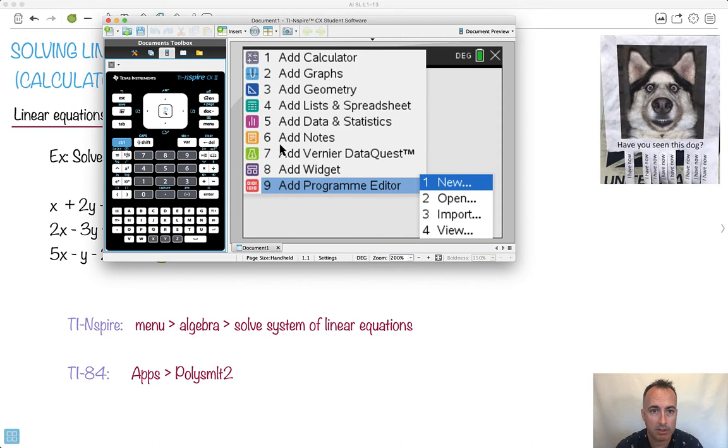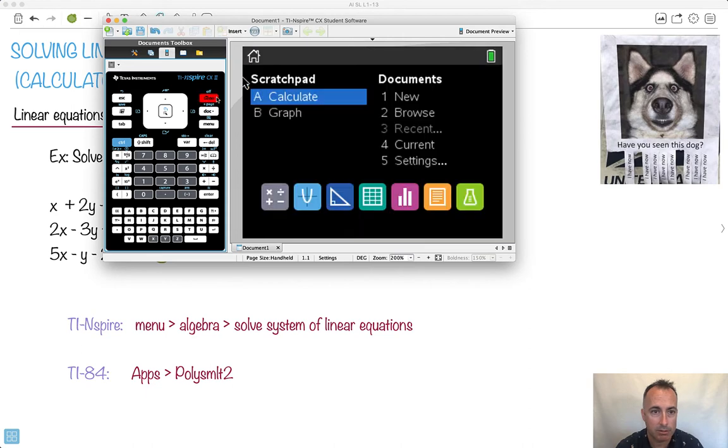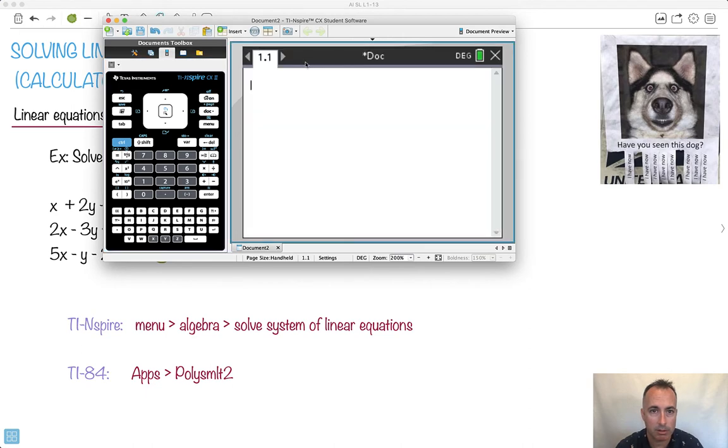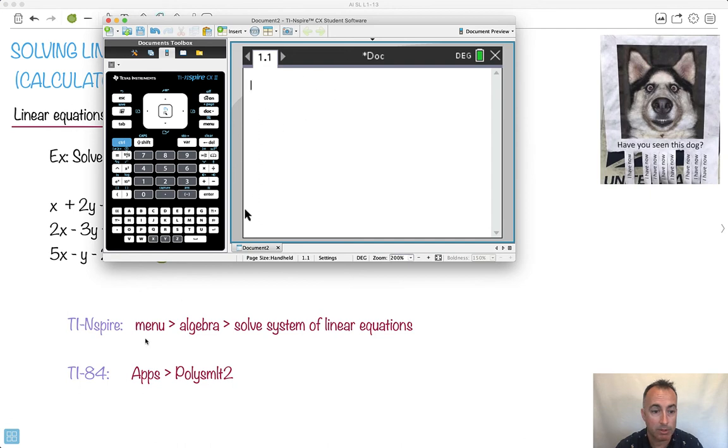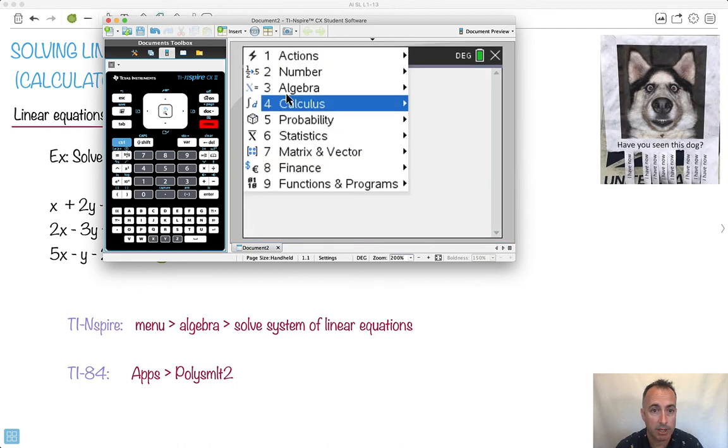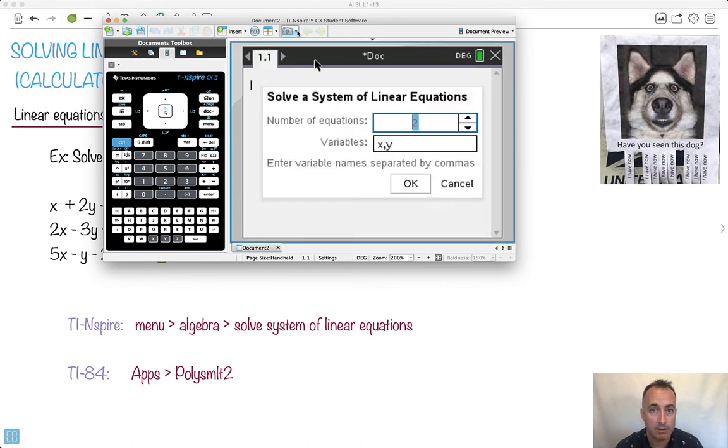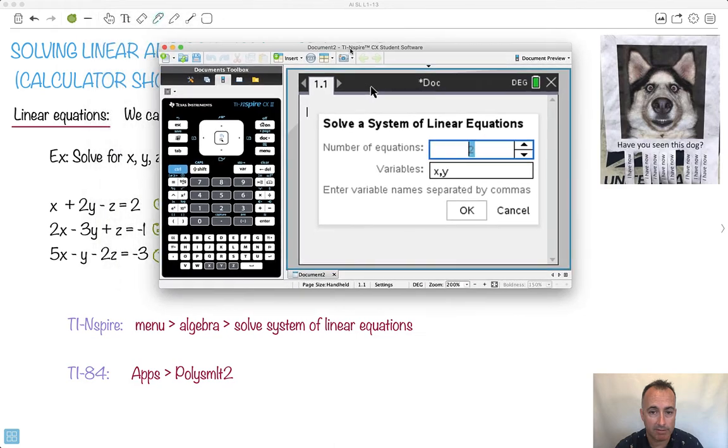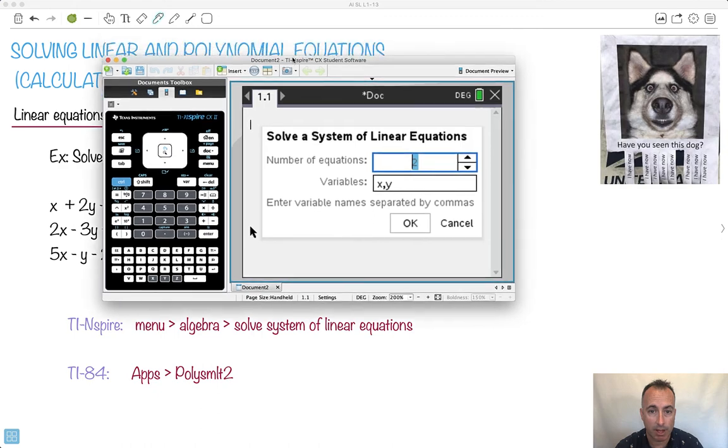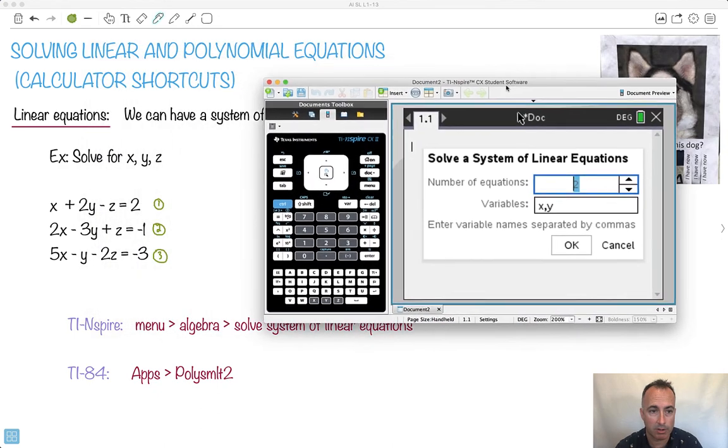Let me show you on the TI-Nspire. I'll do a new document, a new calculator. What I would do is press Menu first, go to Algebra, then go to Solve a System of Linear Equations. Now different calculators have different ways of getting there, but your calculator has a way of doing this.